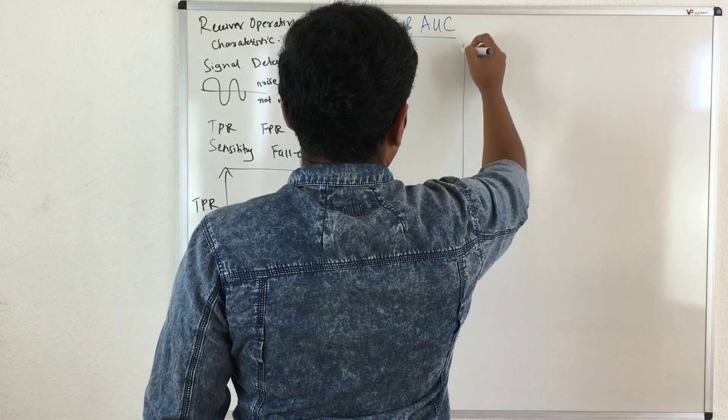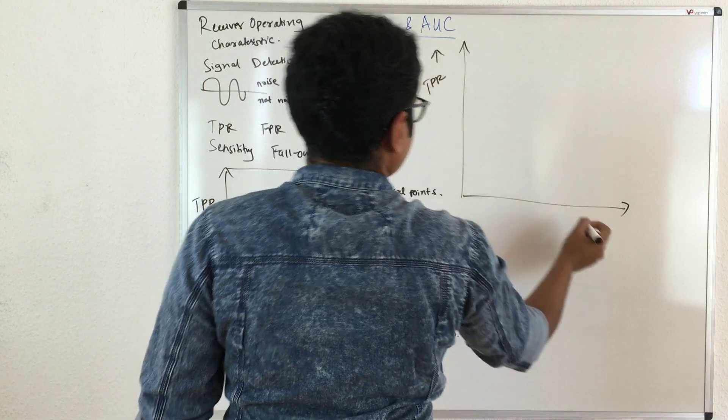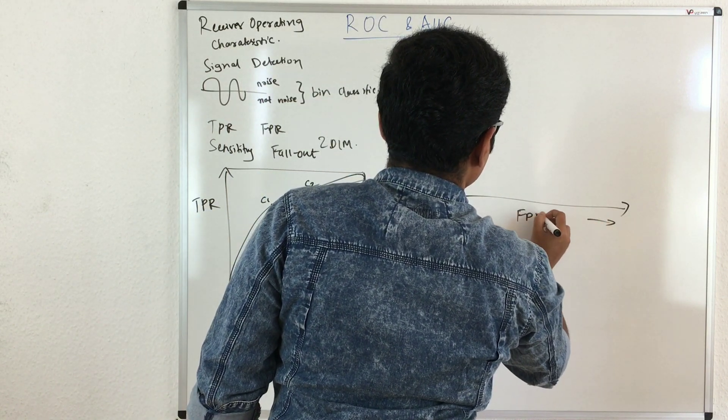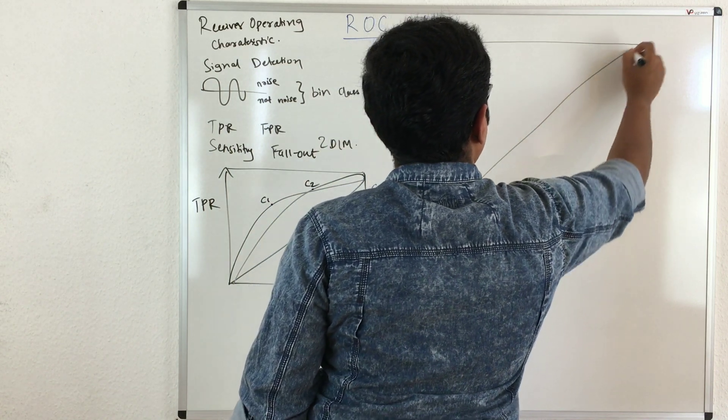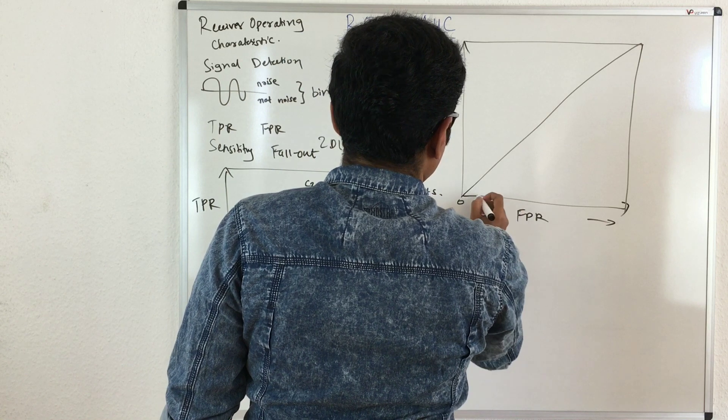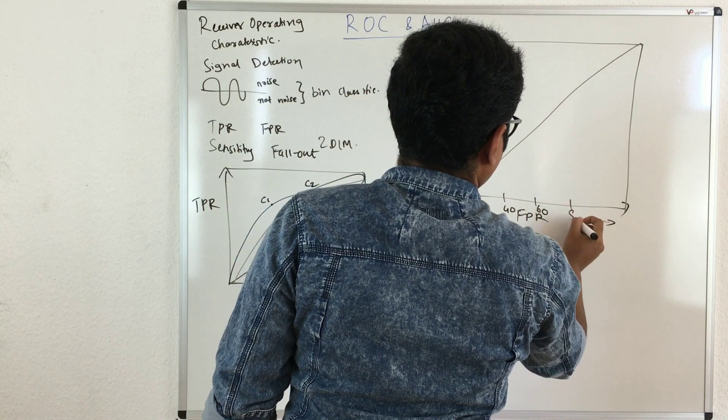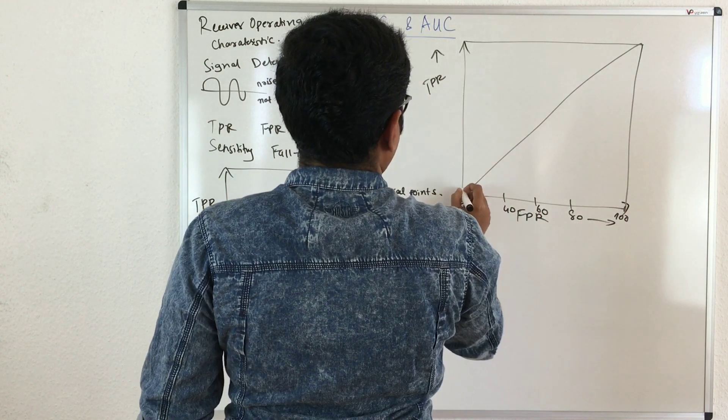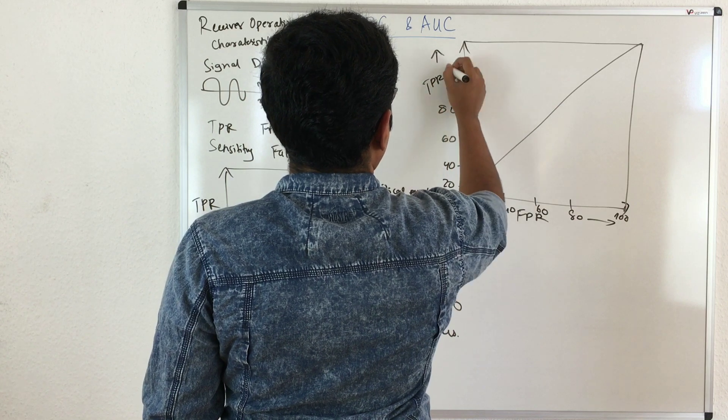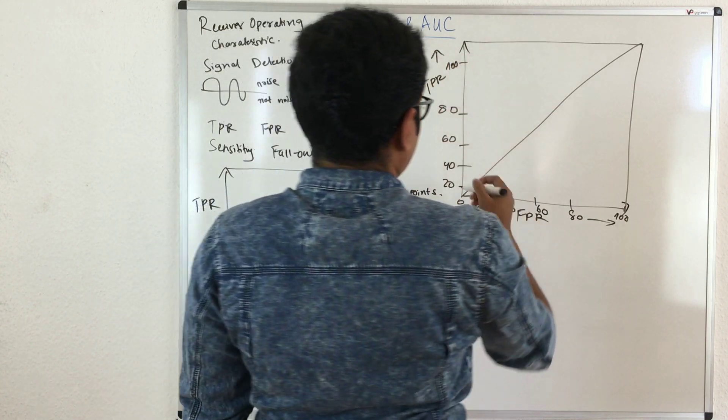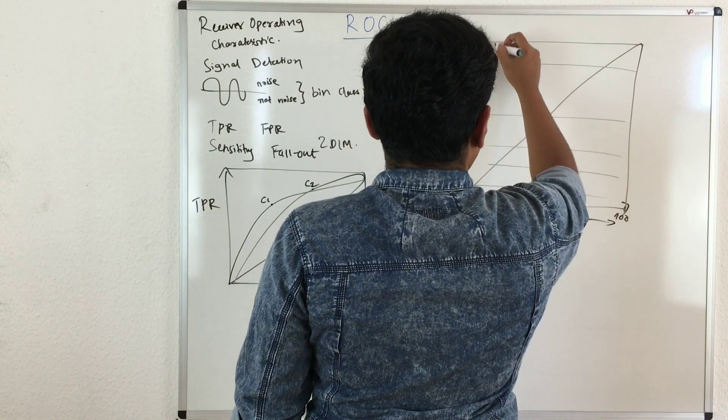You have true positive rates and false positive rates. Say for example you have your curve like this, and this is a starting point: 20, 40, 60, 80, and 100, and here you have 20, 40, 60, 80, and 100. So it's connected, it's a graph.